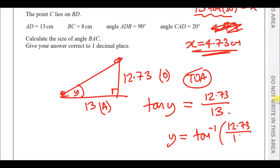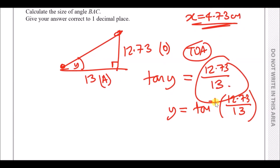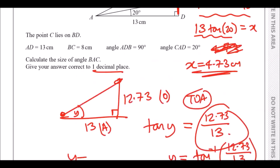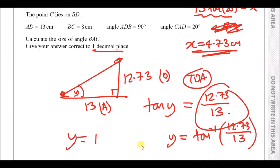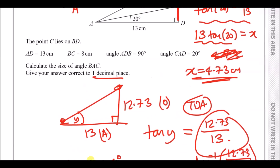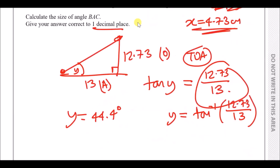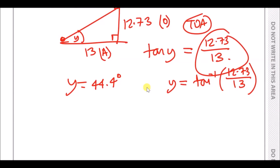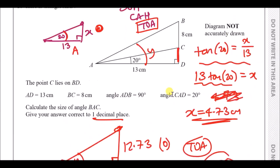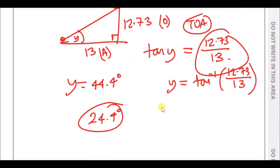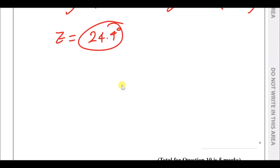To find angle y, use inverse tan: y = tan⁻¹(12.73 / 13). Press Shift + tan on the calculator and enter 12.73 ÷ 13. This gives y ≈ 44.4°. Since part of that angle is already known as 20°, the remaining angle BAC = 44.4° − 20° = 24.4°.